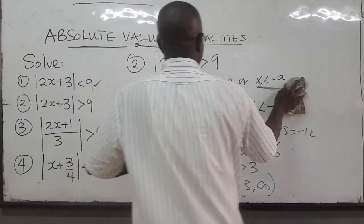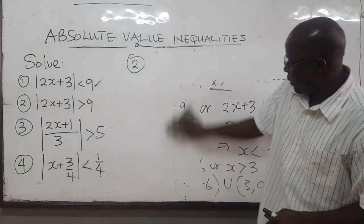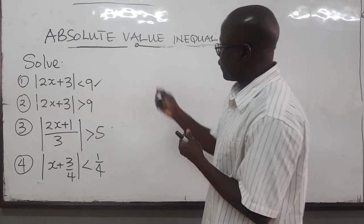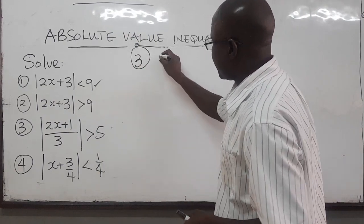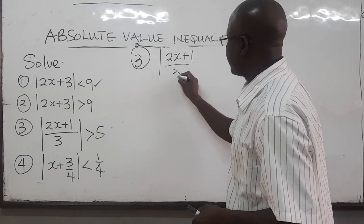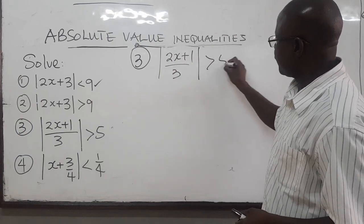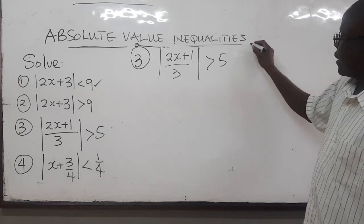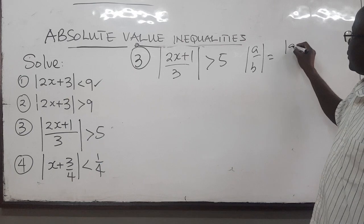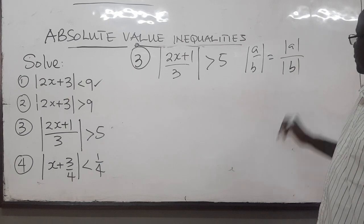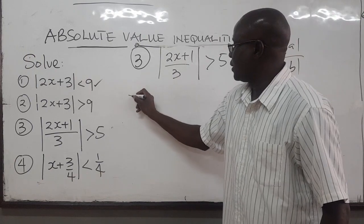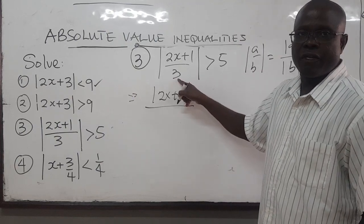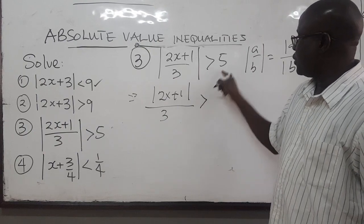Let's do number 3. We have the absolute value of (2x plus 1) over 3, is greater than 5. The key challenge here is to rewrite it in a nicer way. If we have the absolute value of a over b, this equals the absolute value of a over the absolute value of b. So this becomes the absolute value of 2x plus 1, all over the absolute value of 3, which is just 3.